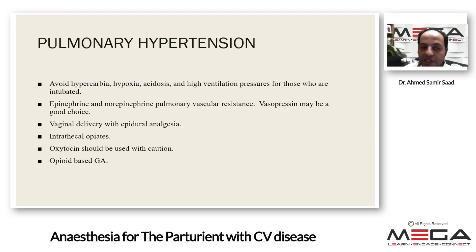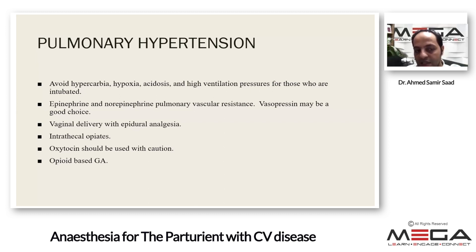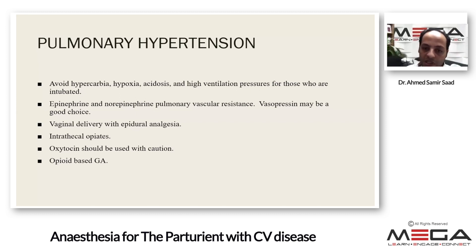Avoid everything that may increase pulmonary hypertension, such as hypoxia — patients should receive oxygen continuously. Avoid acidosis. If mechanically ventilated, avoid high ventilation pressures. Vasopressors such as epinephrine or norepinephrine may be used, but note they also increase pulmonary vascular resistance. Vasopressin is recommended by some as it may increase systemic vascular resistance without affecting pulmonary pressure.